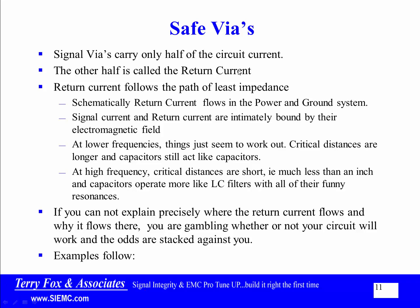The return current will follow the path of least impedance. Schematically, return current flows in the power and ground system. So when you see that ground symbol or power symbol, that's where the return current flows schematically. The problem is that the signal current and the return current are intimately bound by their electromagnetic field.